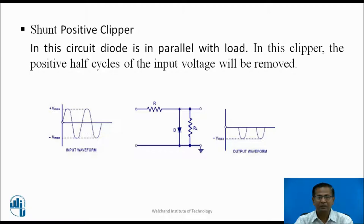Shunt Positive Clipper: In this circuit, the main control element is connected in parallel and it removes the positive half cycle of the input voltage — that is why the name is the shunt positive clipper. During positive half cycle, diode D is forward biased, it conducts and acts as a short. The load is connected across the diode, so for the complete positive half cycle, the drop across the diode and load is the same, meaning the drop across load is zero. During negative half cycle, diode D is reverse biased, it acts as open, therefore output follows the input — the negative half cycle appears across the load. That is why the name is the shunt positive clipper.